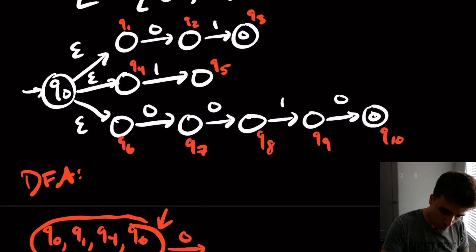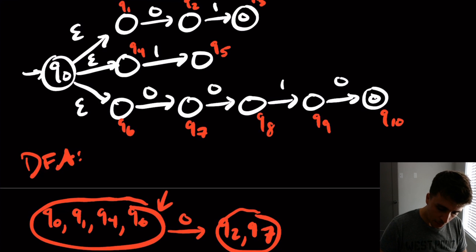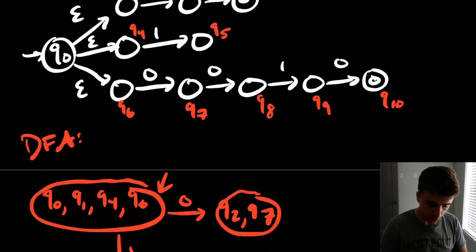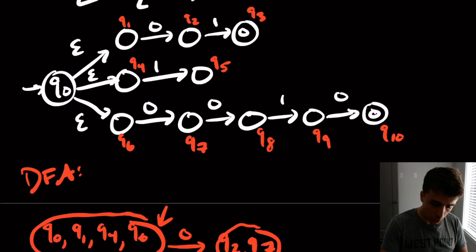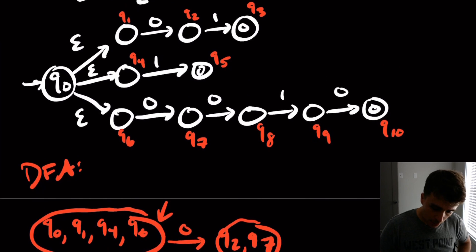So on 0, the states we can go to are q2, q4 doesn't have anything on 0, and q6 goes to 7. So on 0, we can go to q2 and q7. And there's no epsilon transitions after here, so we don't need to worry about epsilon transitions and closure. For the one transition, the only one that matters is q4. Oh, that should be a final state. The only one that matters is q4, because that's the only one that has a one transition out. And so therefore, the only state we can get to is q5.